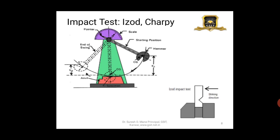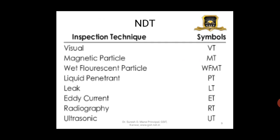We have seen tensile test, fatigue test, torsion test, and impact test — all destructive tests where the specimen is destroyed, so they involve cost. Now let us come to non-destructive testing. As the name implies, the component being tested is not destroyed. Various types of NDT are available, like visual test, magnetic particle test,